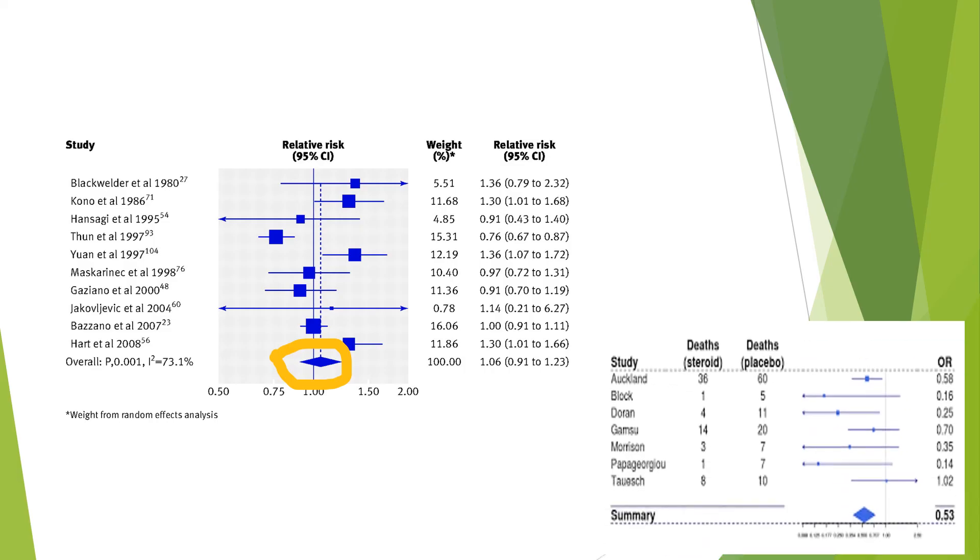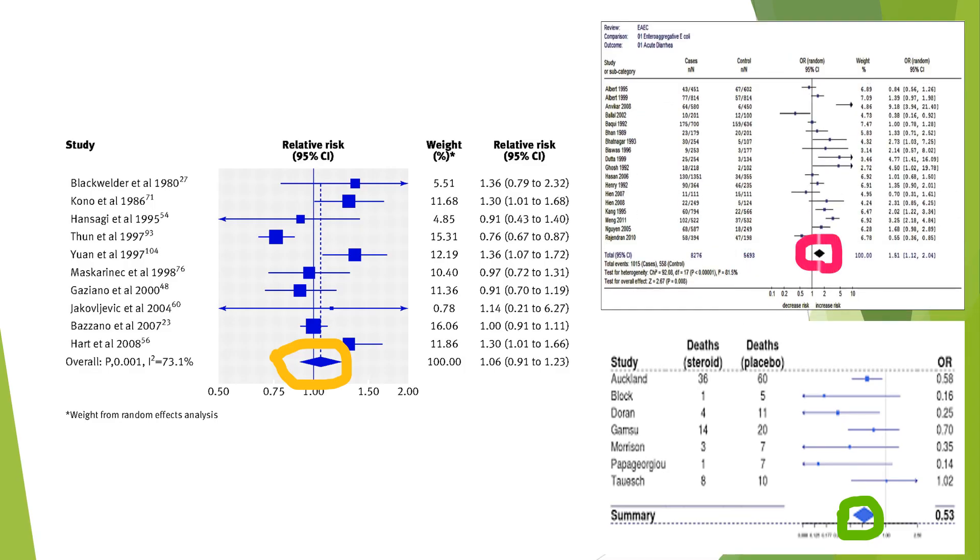If the diamond is to the left of the line, there are less episodes of interest in the treatment group. If the diamond is to the right, there are more episodes of outcome in the treatment group.